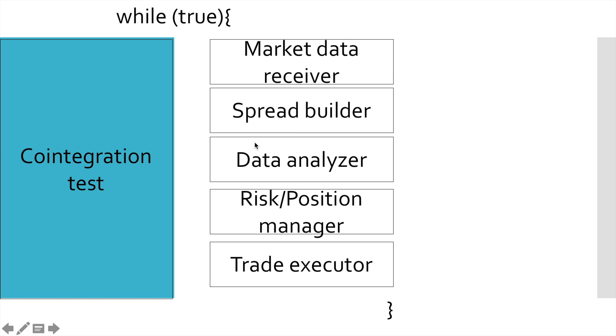Today we start working on data analyzer. The purpose of this model is to use spread as input data and provide trading signals as the output. In order to produce those trading signals, we need a certain strategy. In our case, data analyzer will be based on mean reversion strategy with z-score. If z-score goes above or below certain values, we open long or short positions respectively. And when z-score returns to zero, we close those positions.